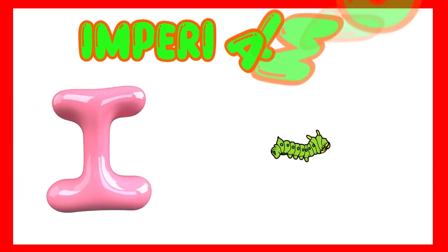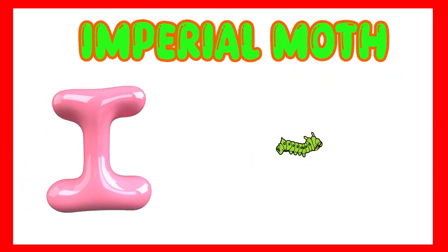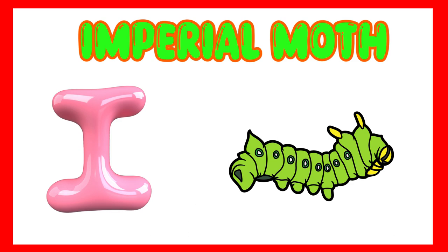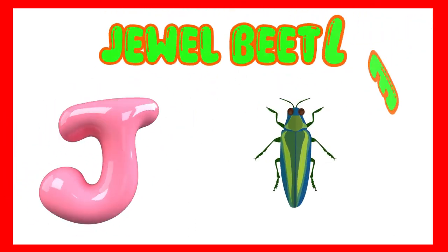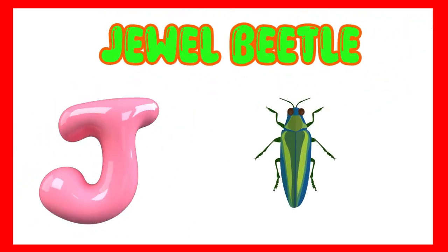I is for imperial moth. Ih, imperial moth. J is for jeweled beetle. J, jeweled beetle.